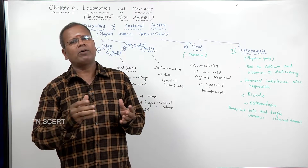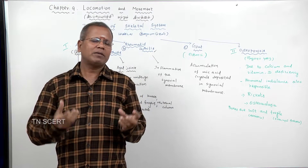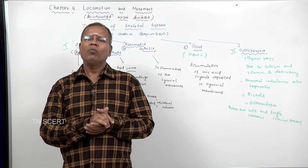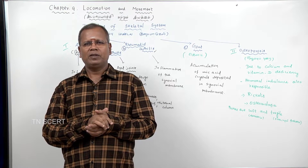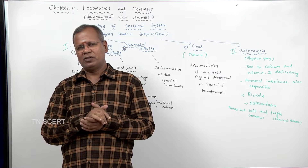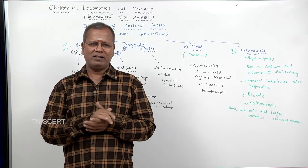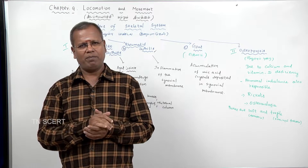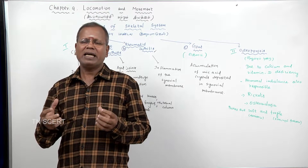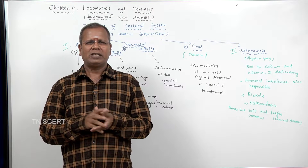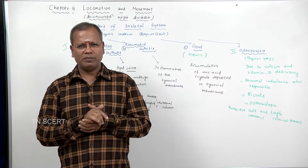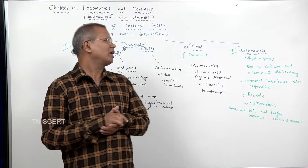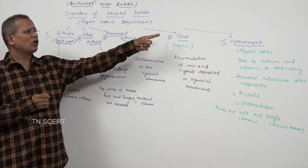We have already studied about bones and joints, and about the types of bones and the types of joints. Now, what are the diseases? What are the disorders? Diseases and disorders are different. Defects can occur in the skeletal system and in the joints. Generally, we are going to talk about two disorders of the skeletal system.